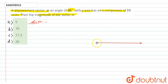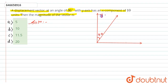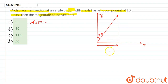Let's suppose this is the x-axis and this is the y-axis. We have the vector here, making an angle of 30 degrees with respect to the y-axis. According to the question, the x-component of the vector is 10 units — this length is given to us.